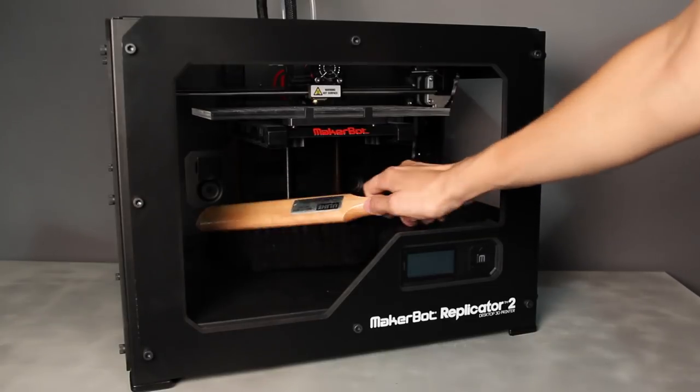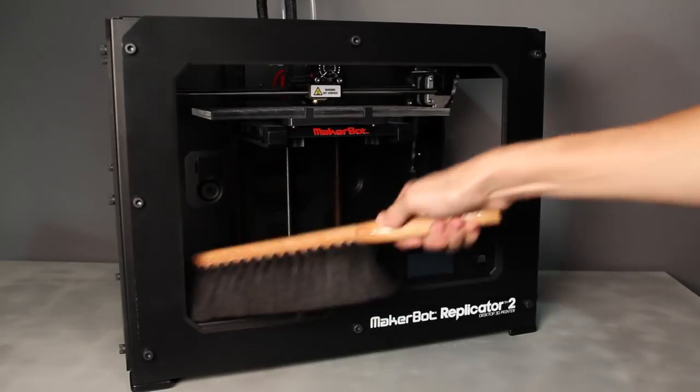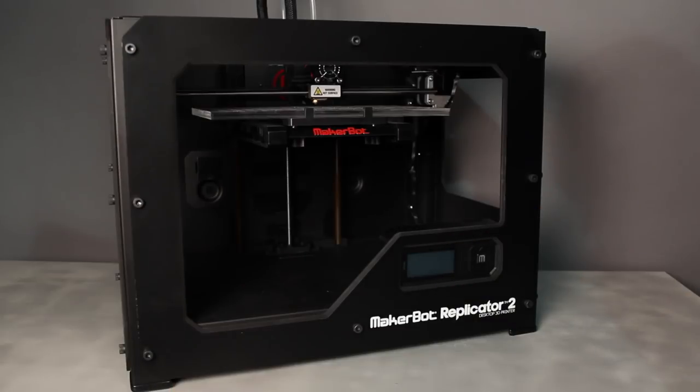The final step in the maintenance routine is to sweep out any bits of PLA that may have accumulated on the floor of your MakerBot Replicator 2 to keep it nice and tidy.